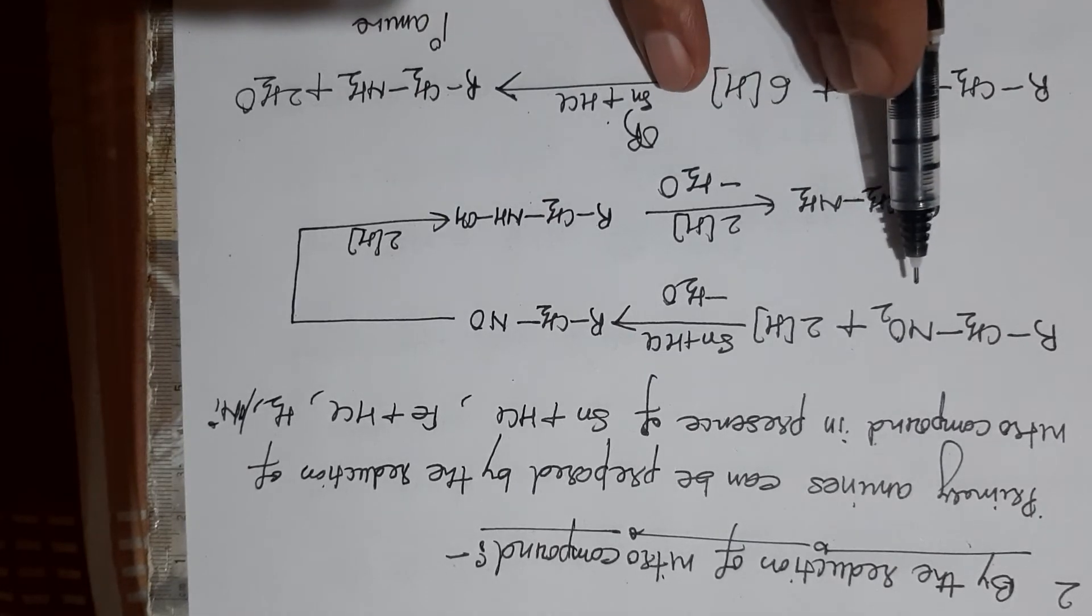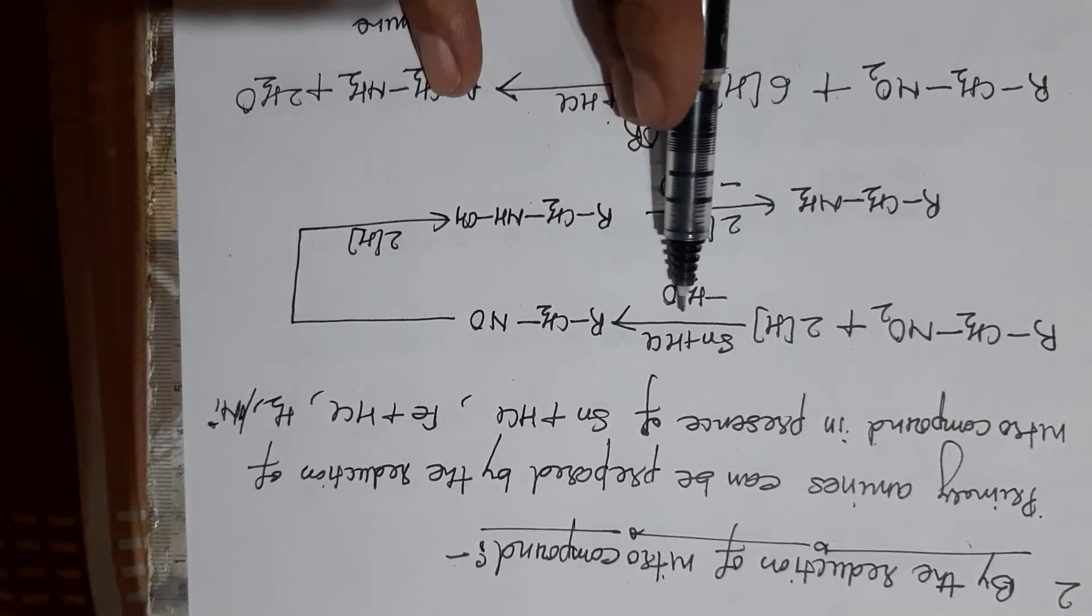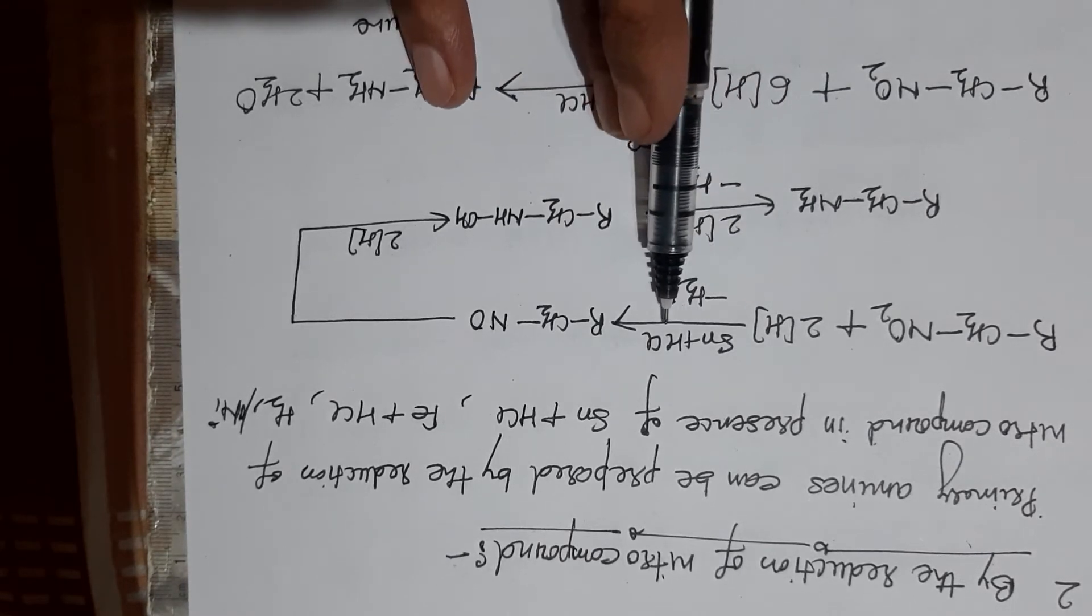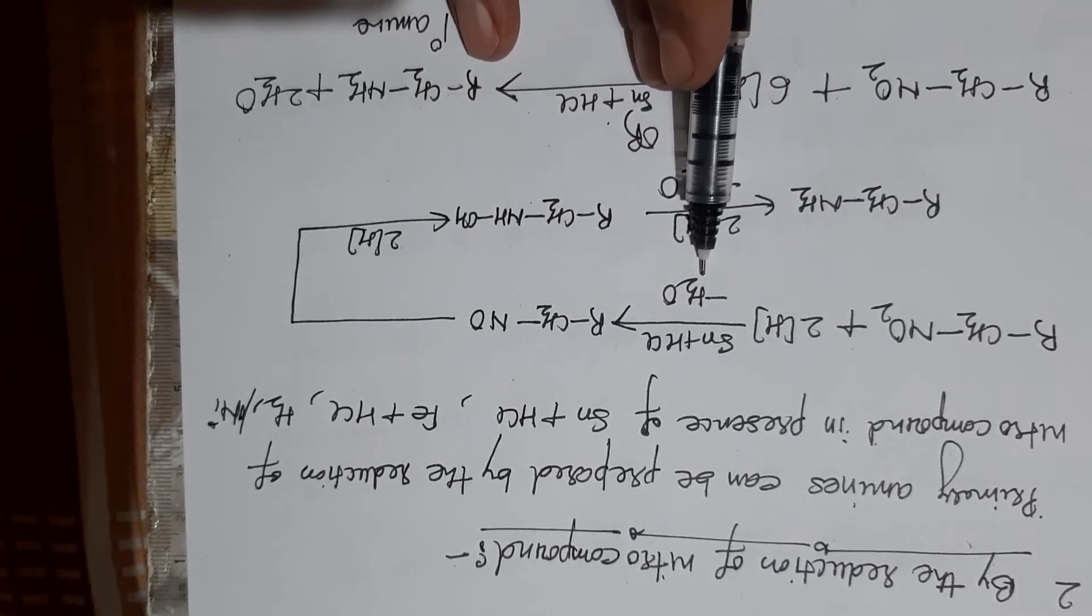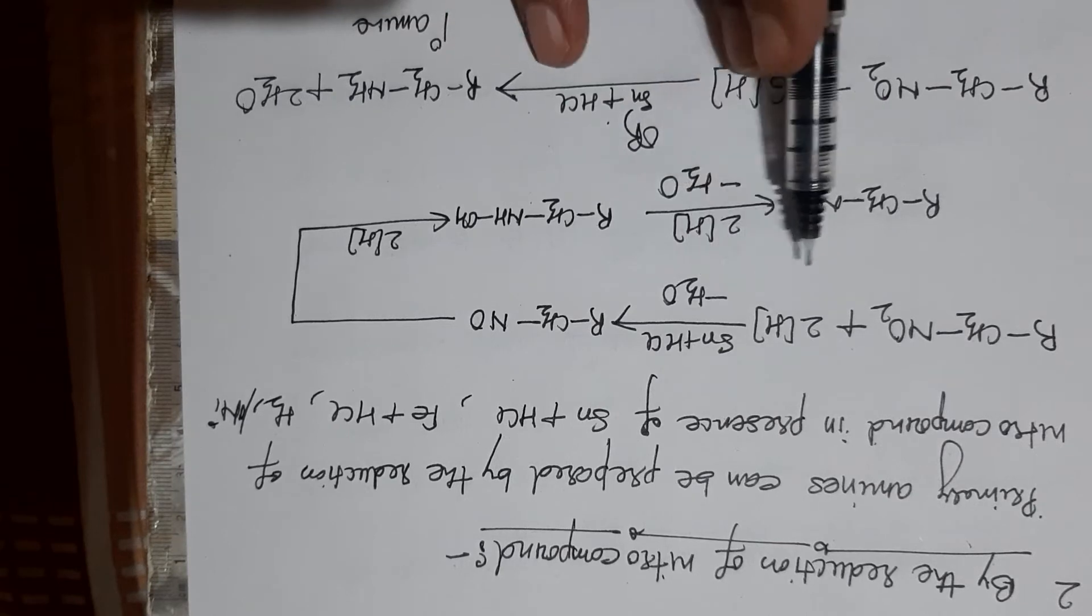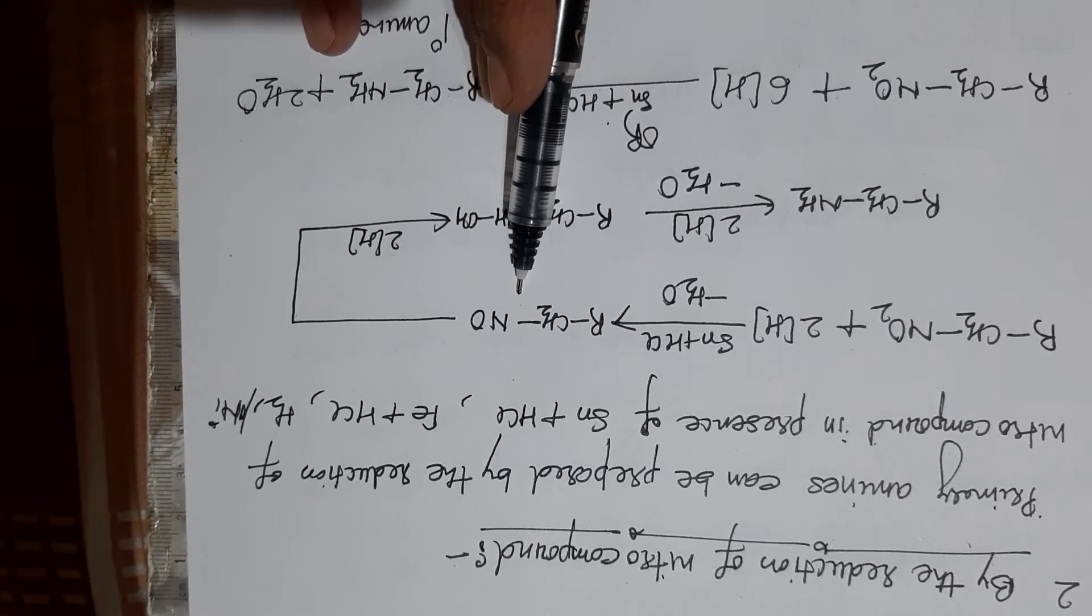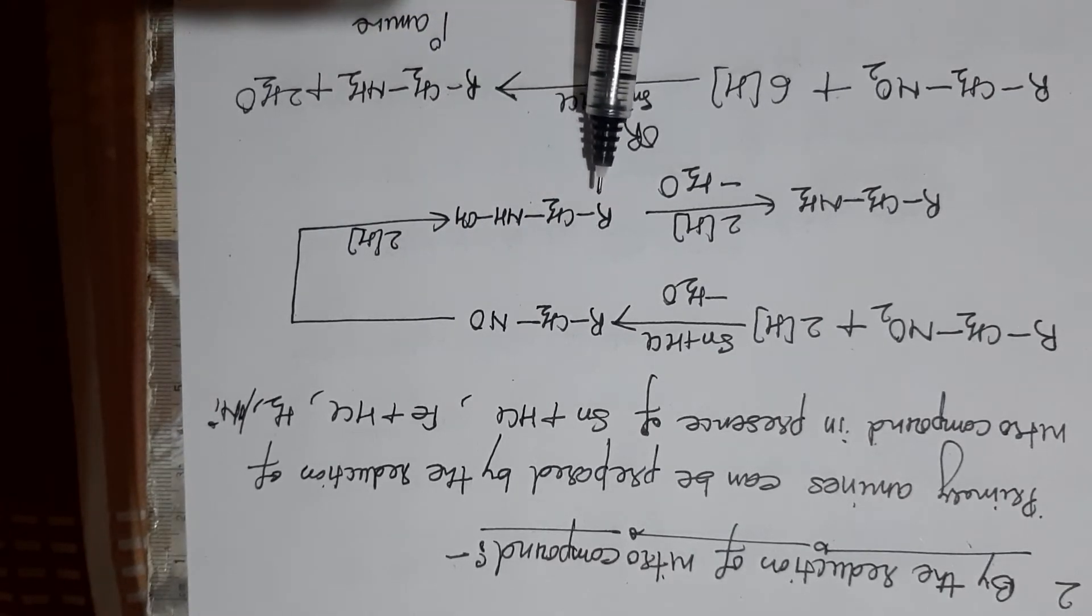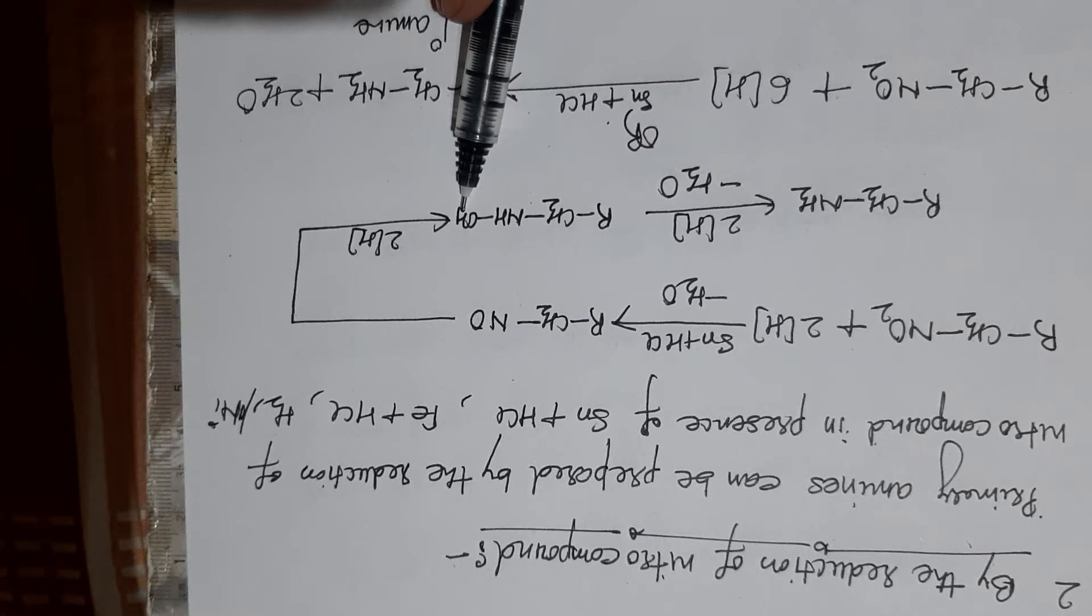As you are seeing, this is nitroalkane. When it undergoes reduction, I have taken here tin and hydrochloric acid, so one water molecule will be removed. That's when one oxygen will be removed and you will get nitrosoalkane. On further reduction it will form CH2-NH-OH, or you can say hydroxylamine.